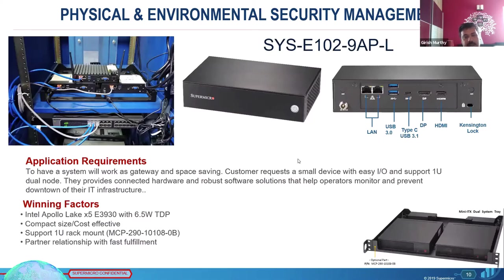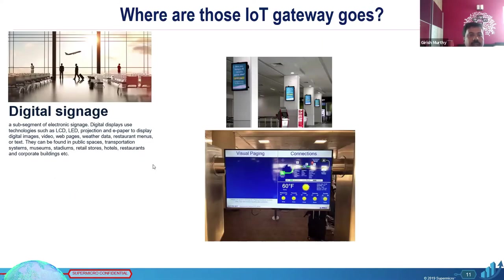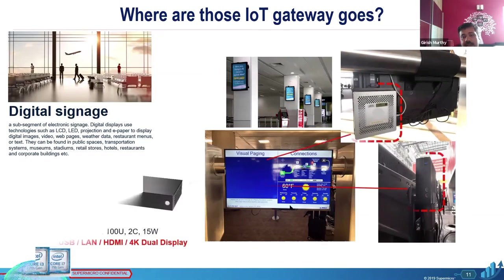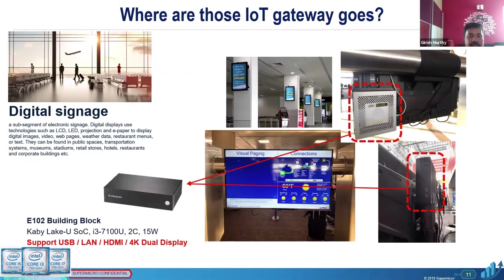One use case is physical and environmental security management — mounted on a 19-inch rack and using an Apollo Lake processor to monitor environmental and security conditions in a data center, sending alarms if temperatures go up. Another example is digital signage: the box is mounted behind a display in an airport showing flight information or advertisements. A typical system uses a Core i3 7100U, a dual-core 15-watt processor, with an HDMI port and 4K display support.